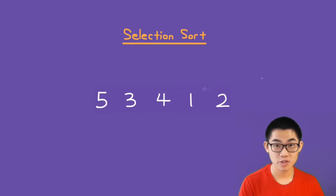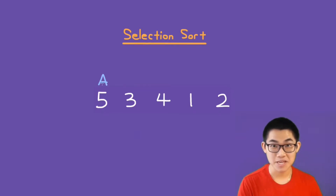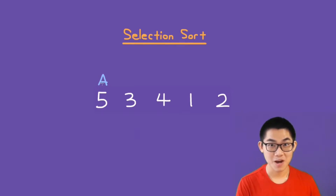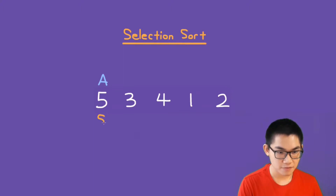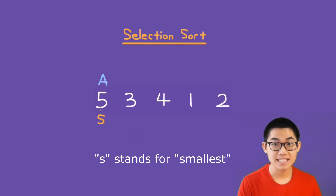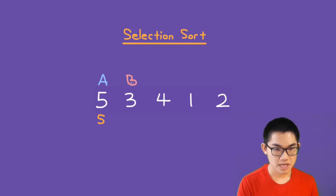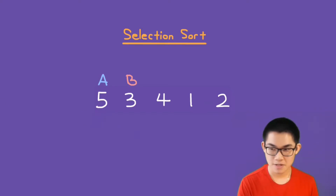The first thing we're going to do is put A onto the array. A says to B, find me the minimum number of this array. B will assume that the first number, where A is at, is the minimum number. Then we put B onto the array. B looks at number 3 and says, is 3 smaller than 5? The answer is yes, so B says that 3 is the smallest number.